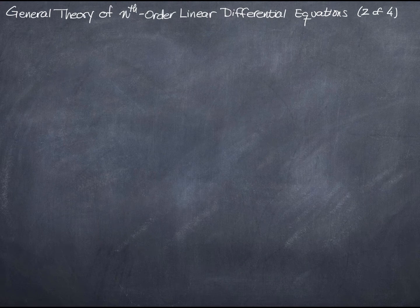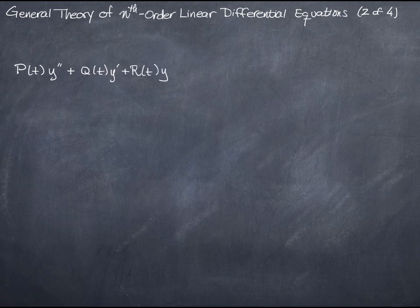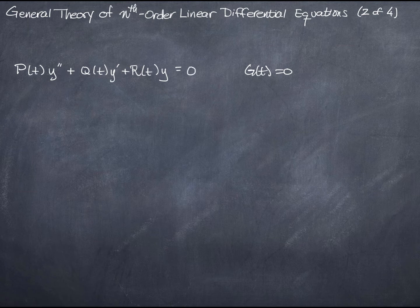In section 3.1, we said that a second-order homogeneous differential equation was something that looked like this: some function of t times the second derivative of y, plus another function of t times the first derivative of y, plus a third function of t times y, equals g of t. And for homogeneous equations specifically, we said that g of t equals 0. This is what we called a homogeneous differential equation.